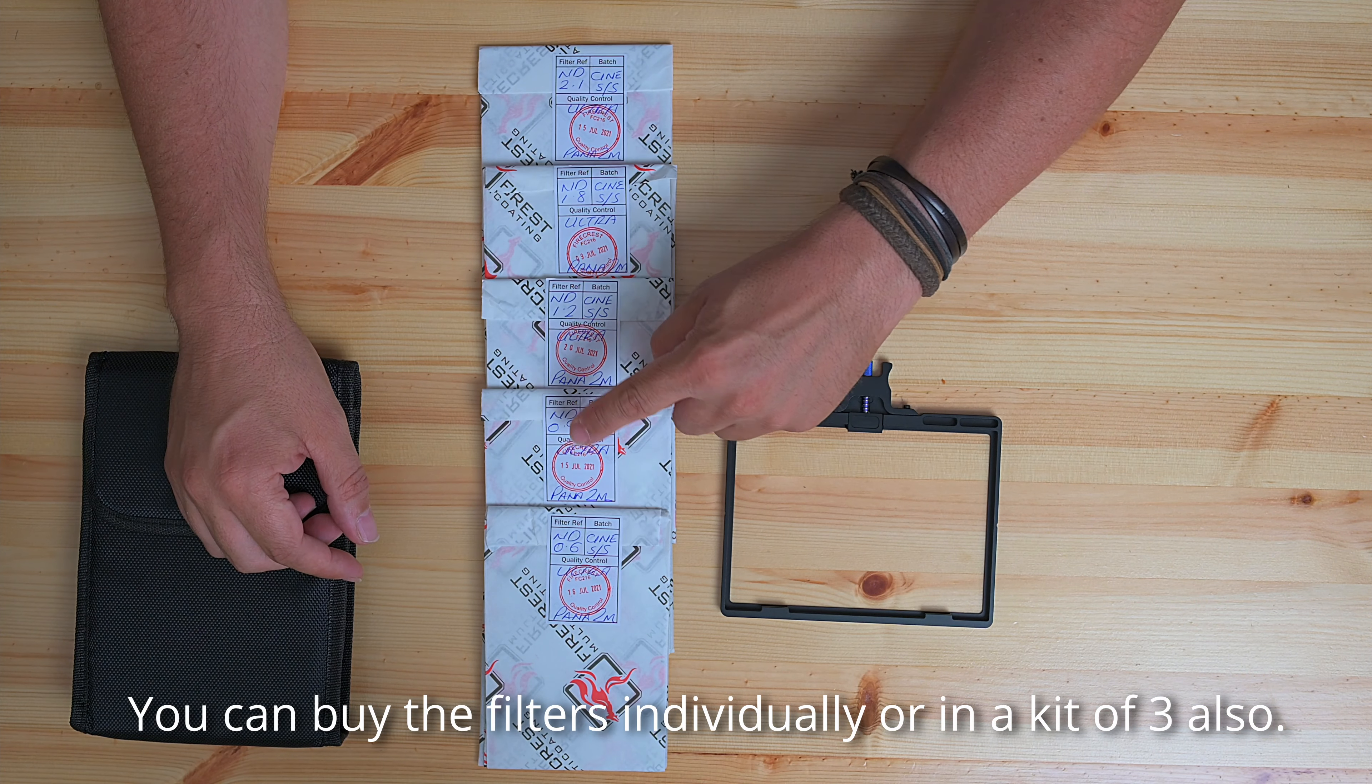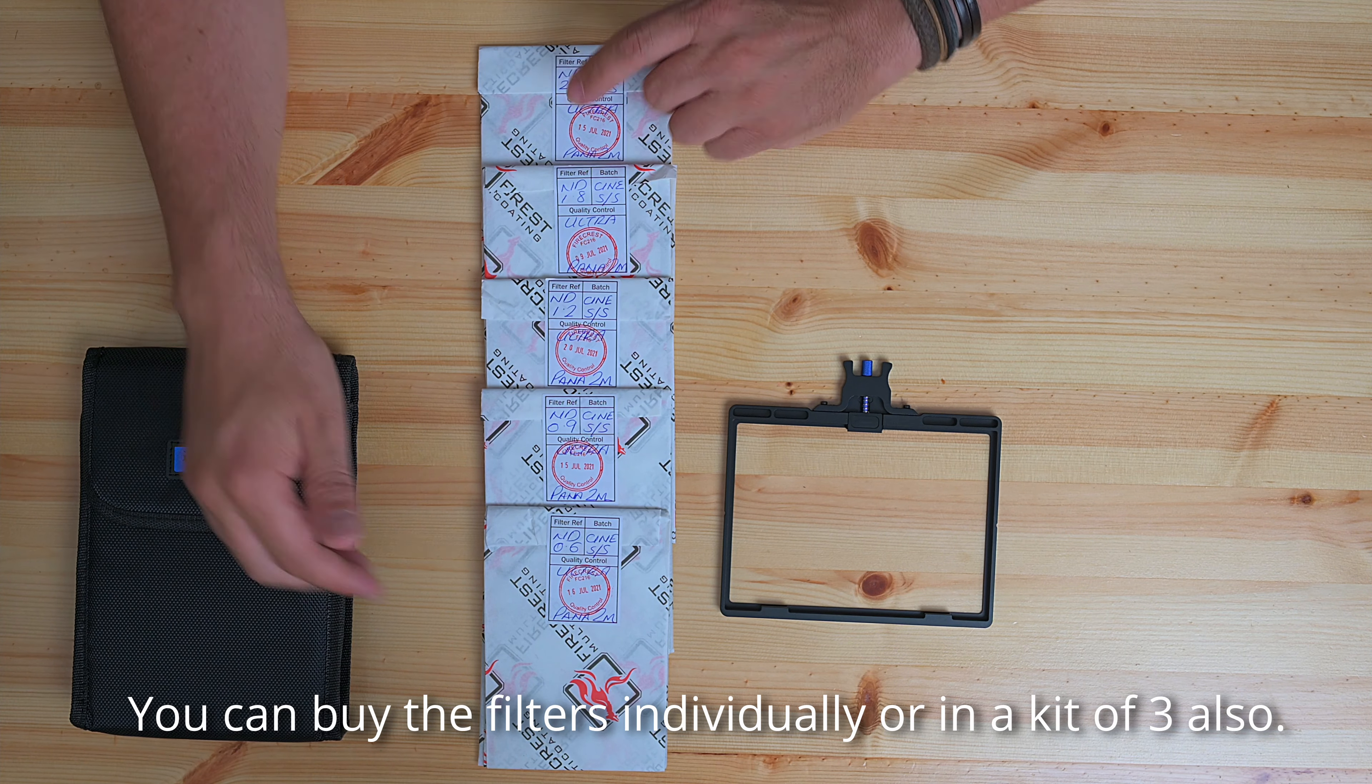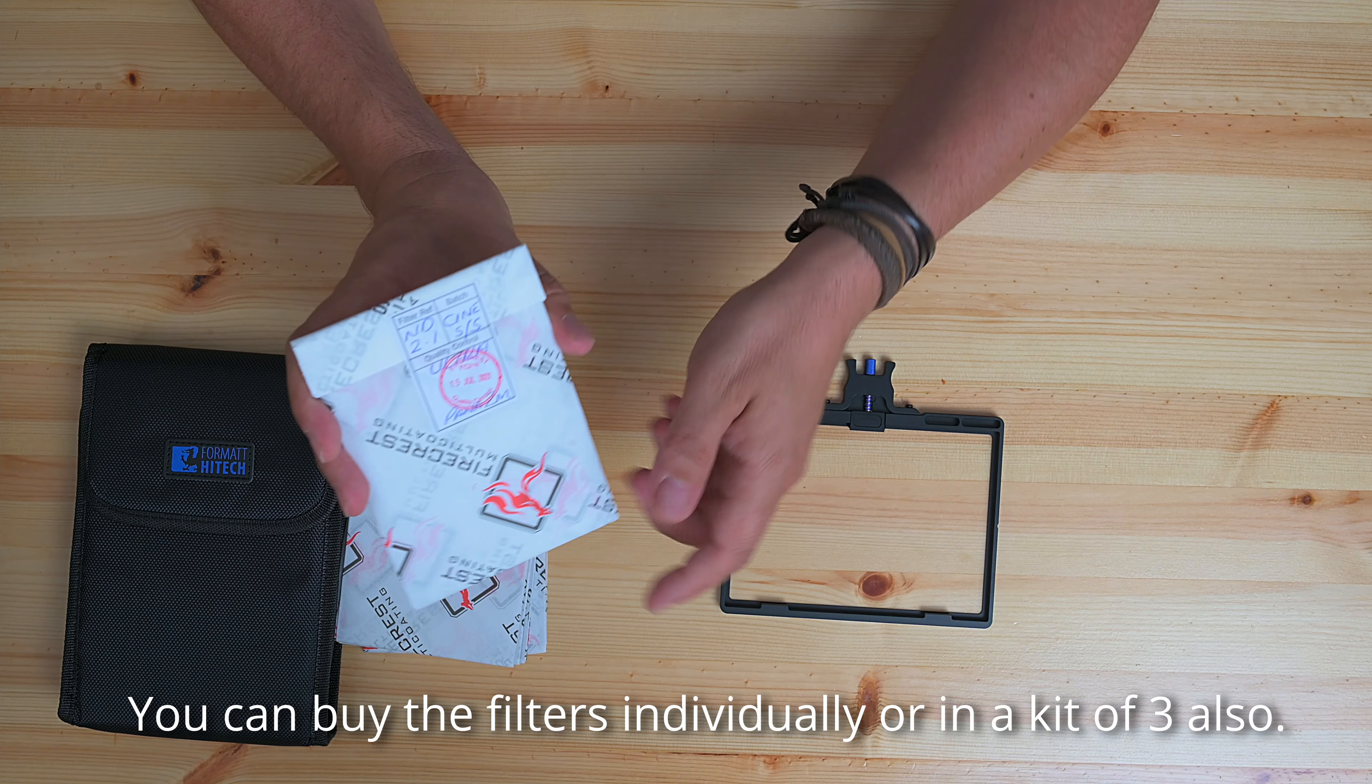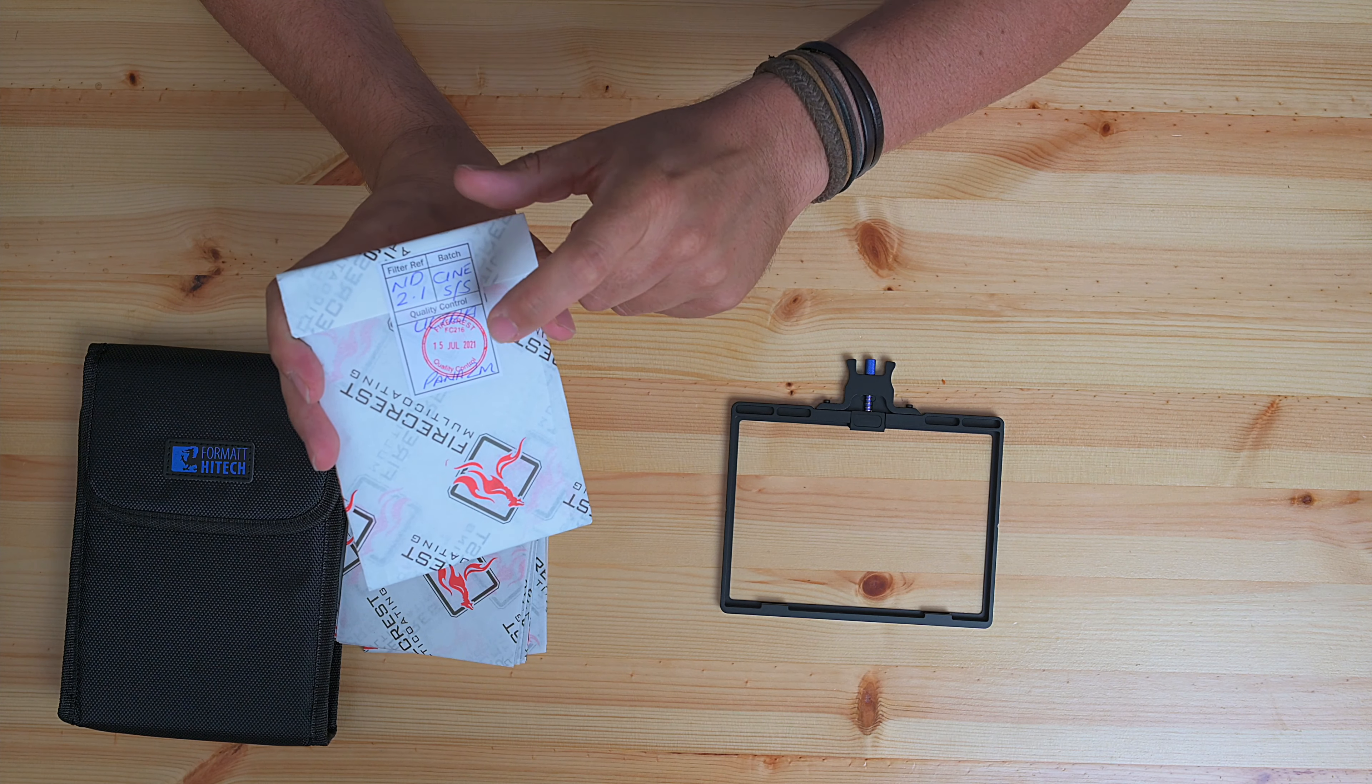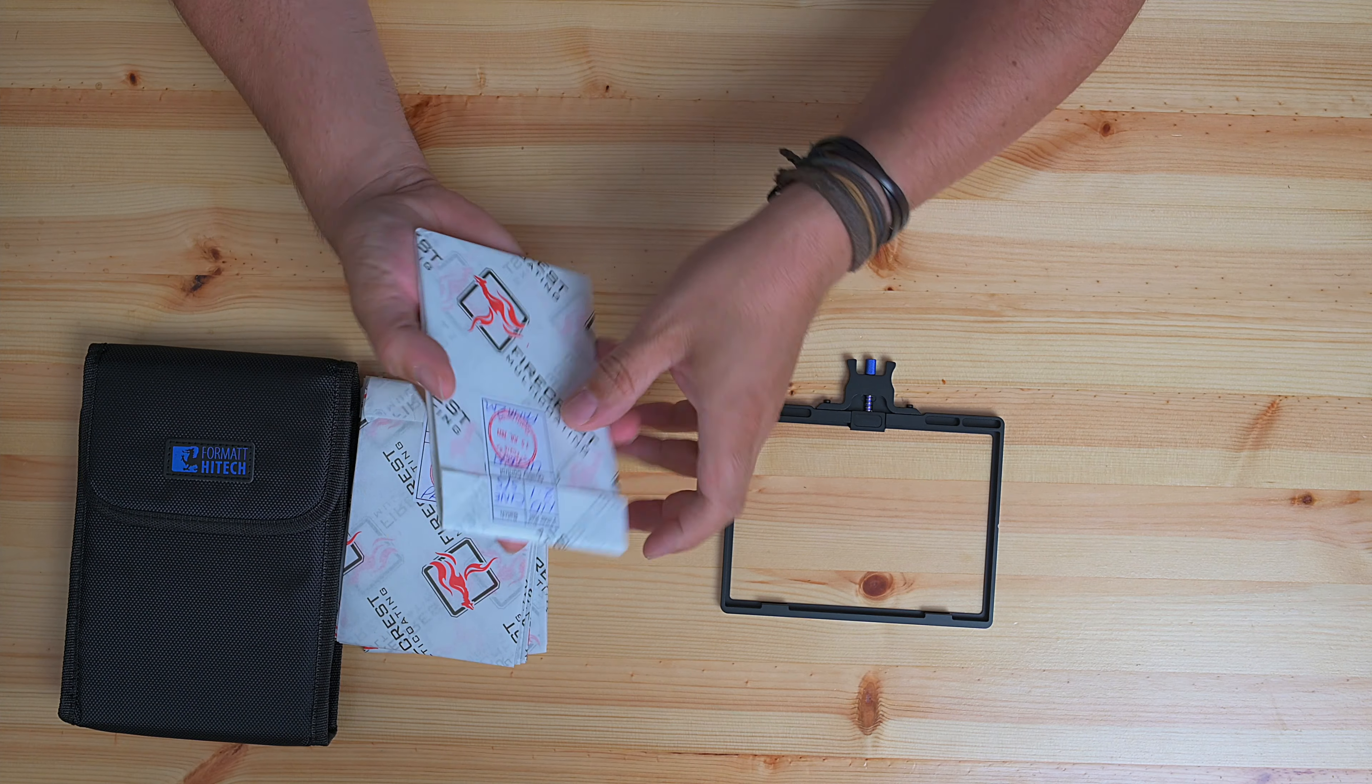The filters come in 0.6, 0.9, 1.2, 1.8, and 2.1 ND densities. This shows the 2.1 ND Firecrest Super Slim Cine Filter. Even the date of manufacturing and testing is on the label.